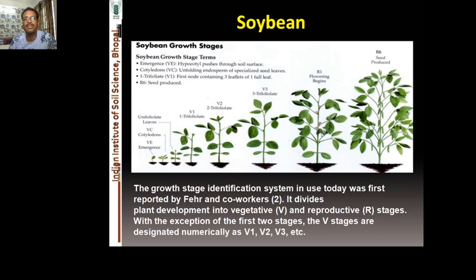The soybean growth stage classification used today was first reported by Fehr and co-workers, dividing plant development into vegetative (V) and reproductive (R) stages. In the vegetative stage, V1 is the first completely open trifoliate, V2 has two fully open trifoliates, continuing through V3–V6. In reproductive stages, R1 is beginning of flowering through to R6 seed production.